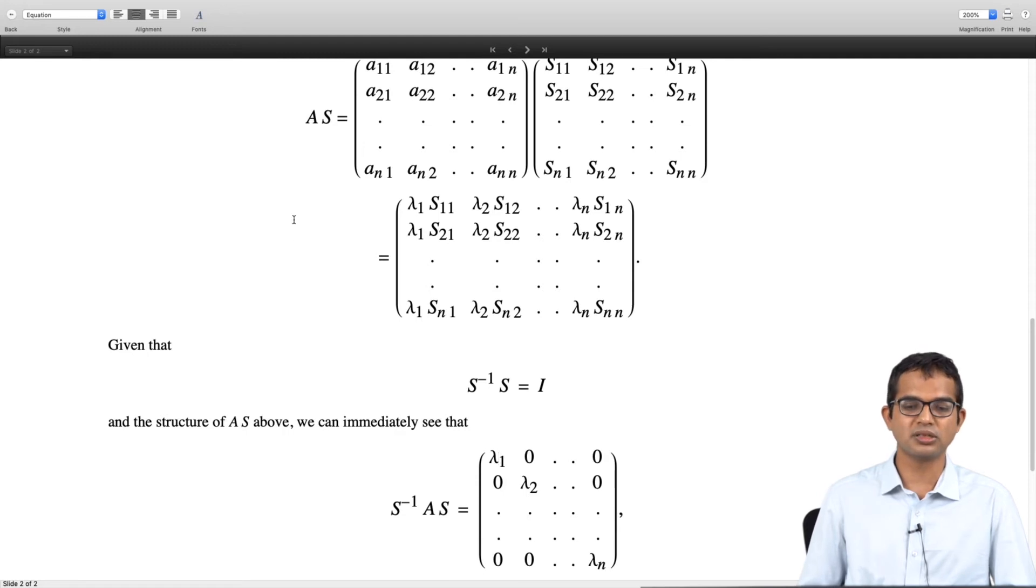You can convince yourself that all this does is if I multiply S inverse with AS instead of S inverse with S I will still have a diagonal structure but now I will have to put in lambda 1 here, lambda 2 here all the way up to lambda n. This you can see because S inverse acting on S is I so if you take the first row and multiply by the first column it must give you just 1 but now I have a lambda 1 here so it will give you lambda 1. Likewise lambda 2 and so on all the way to lambda n.